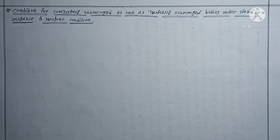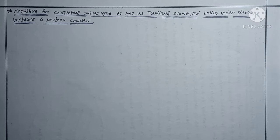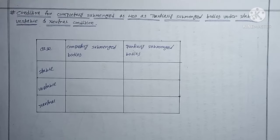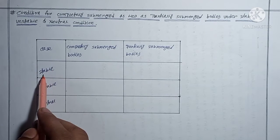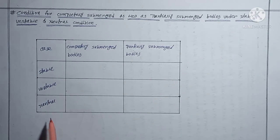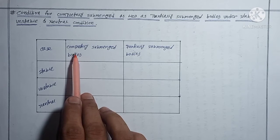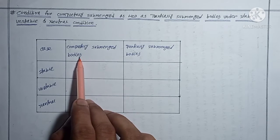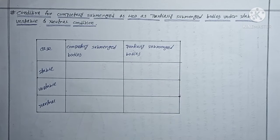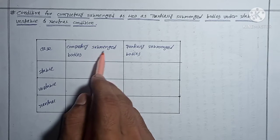For your better understanding, I have made a tabular form. Here one column is for the case, and the other columns are for stable, unstable, and neutral conditions. I will write down the conditions for completely submerged bodies and partially submerged bodies.